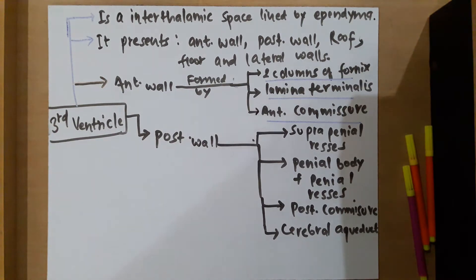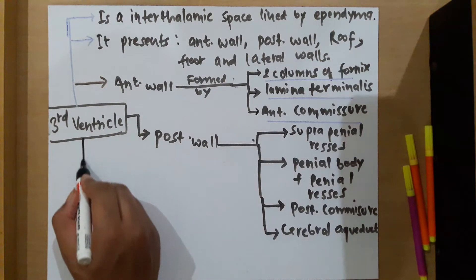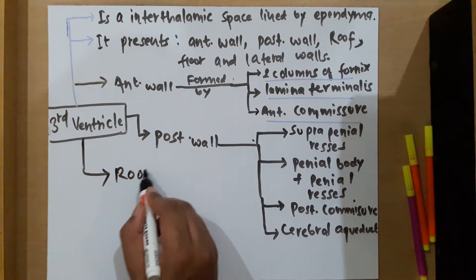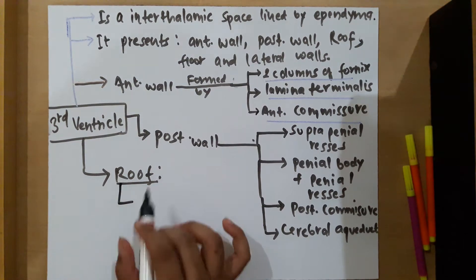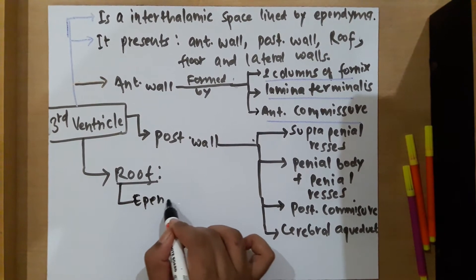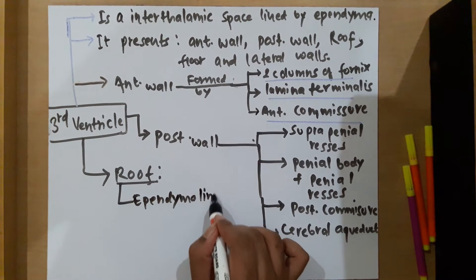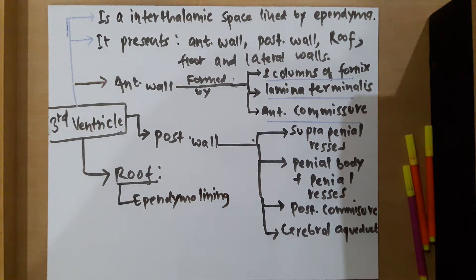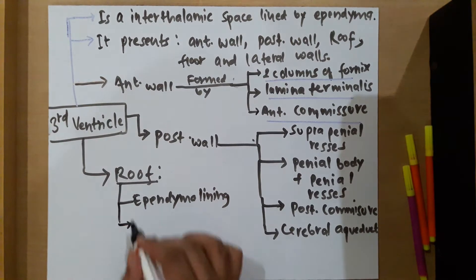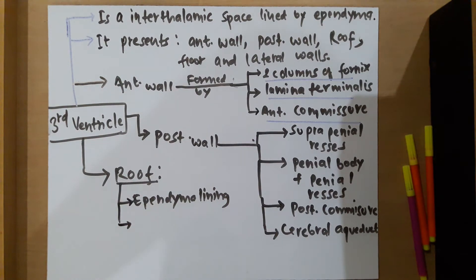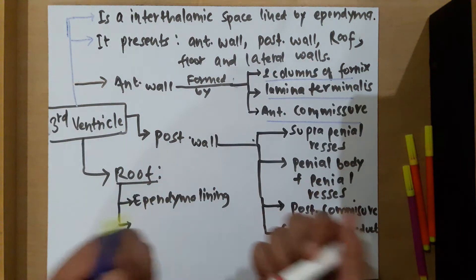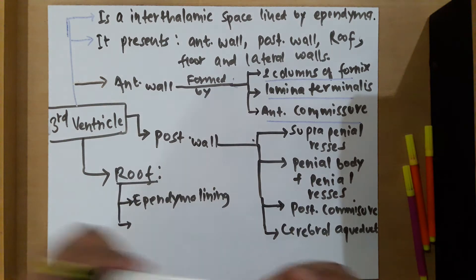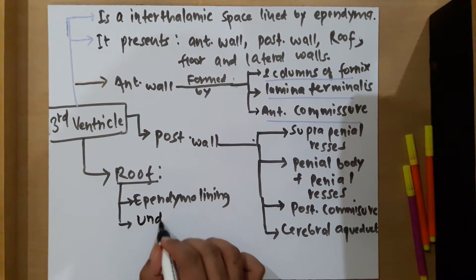Now the roof. The roof is formed by the ependyma lining. As discussed when talking about the fornix, the fornix is separated from the ependyma lining by the tela choroidea, so the under surface of the tela choroidea also contributes to forming the roof of the third ventricle.